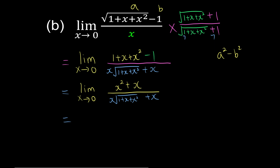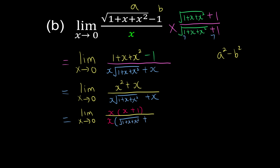Now we can see that every term in the numerator has an x, so we factorize x out, giving x times (x plus 1). At the bottom, we also take x out, leaving x times (square root of 1 plus x plus x squared, plus 1). So nicely, the x cancels, and we're left with (x plus 1) over (square root of 1 plus x plus x squared, plus 1).